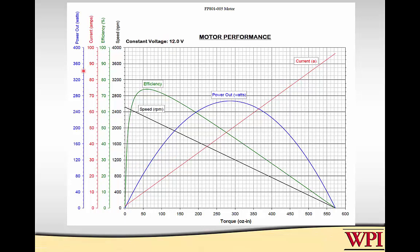If you had a power requirement — say at full 12 volts and you wanted 120 watts — there would be two points on the power curve at 120 watts. In one case you have very low torque and high speed; in the other, high torque and low speed. Almost always you want to run on the low-torque, high-speed side. The efficiency is much higher there — looks like about 75 percent.